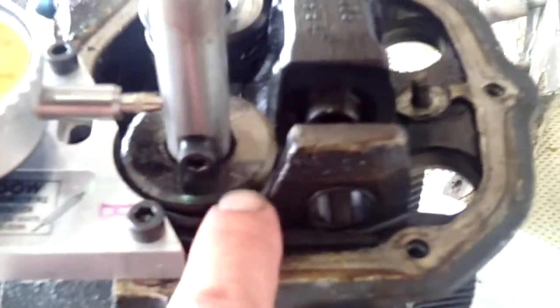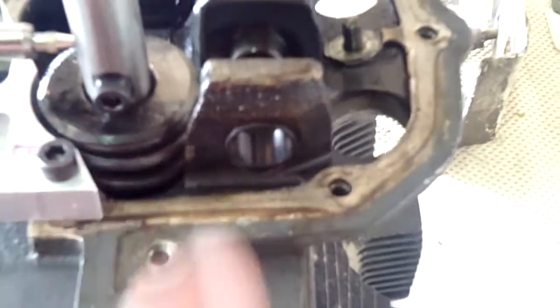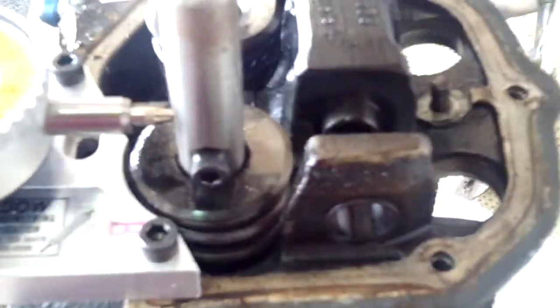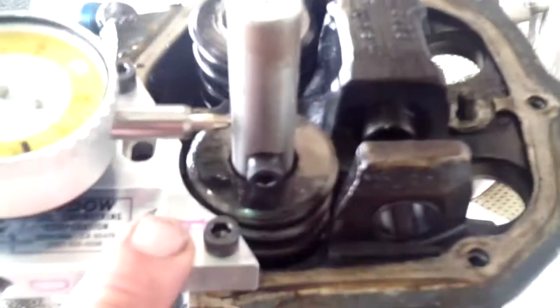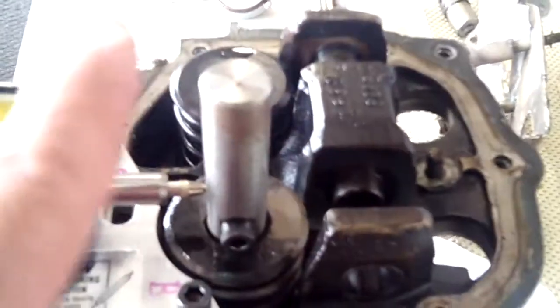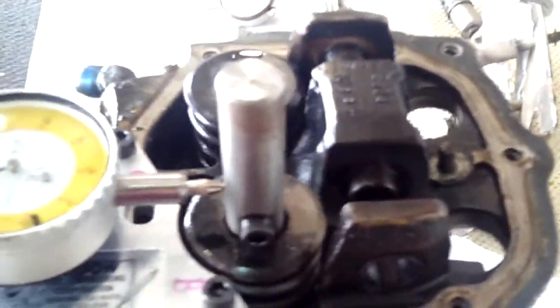The nice thing about having this extension post on the valve is the keepers and the springs are still on the valve. We haven't had to take all that off with this tool. So it's a matter of locking the plate, putting in the valve, and then putting the extension on, and then you can take a direct reading.